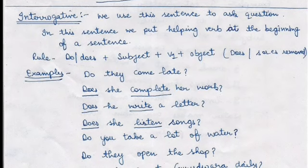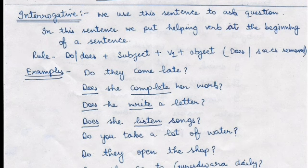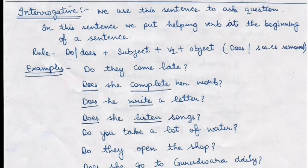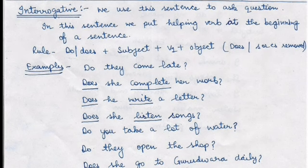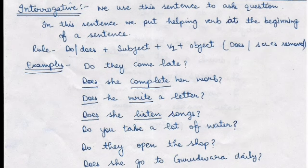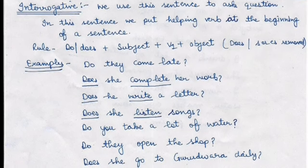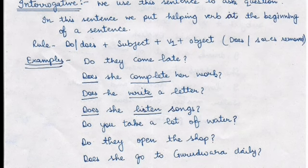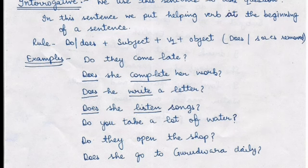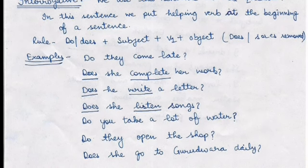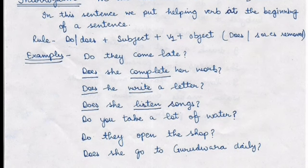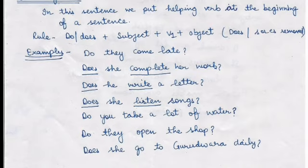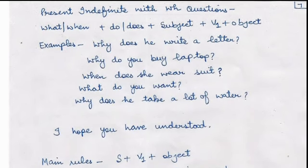Next is the interrogative sentence, used to ask questions. The helping verb is placed at the beginning. The rule is: do/does plus subject plus first form of verb plus object. Again, if 'does' is used, S or ES is removed from the main verb. Examples: 'do they come late?', 'does she complete her homework?', 'does he write a letter?', 'does she listen to songs?', 'do you take a lot of water?', 'do they open the shop?', 'does she go to the gurdwara daily?'